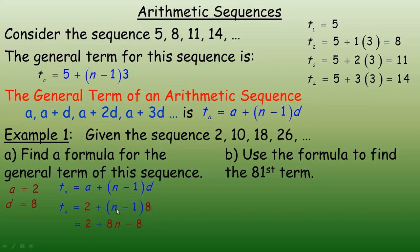We simplify by distributing the 8: 8 times n is 8n, and 8 times negative 1 is negative 8. Collecting like terms: there's only one n term, so it's 8n, and 2 take away 8 is negative 6. So the general term for this specific sequence is the nth term equals 8n minus 6, or equivalently negative 6 plus 8n. You can use that to find any term.